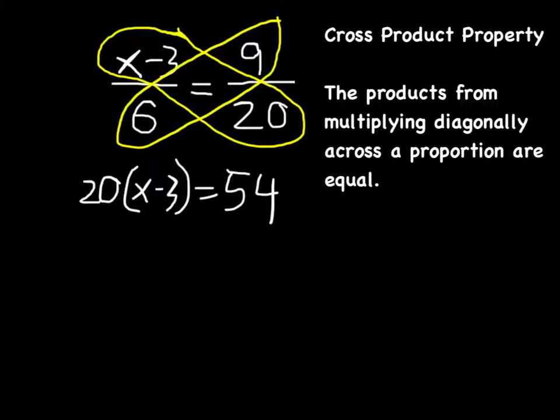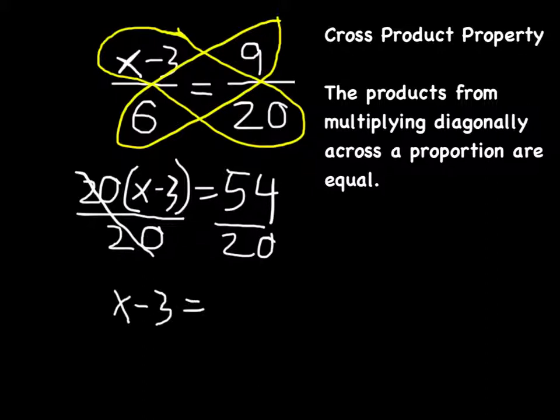I could distribute the 20 on the left side of the equation, or I can simply divide both sides by 20. I'm going to choose the latter. I'm going to divide both sides by 20, which cancels over here, leaving me with x minus 3 equals 54 divided by 20, which is 2.7.